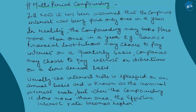Therefore, the effective interest rate — the actual interest rate — is higher than the nominal interest rate. This is because in the case of multi-period compounding, the nominal interest rate is not given once a year but n number of times in a year. That is why the effective interest rate becomes higher than the nominal interest rate.